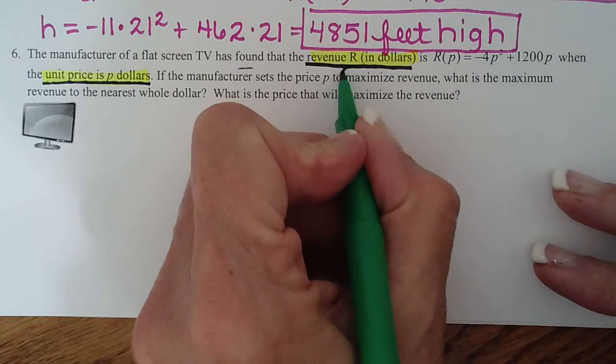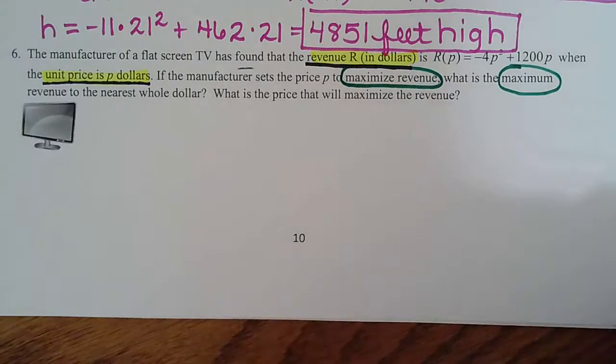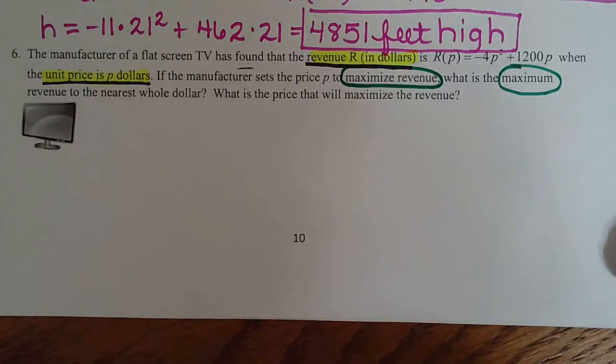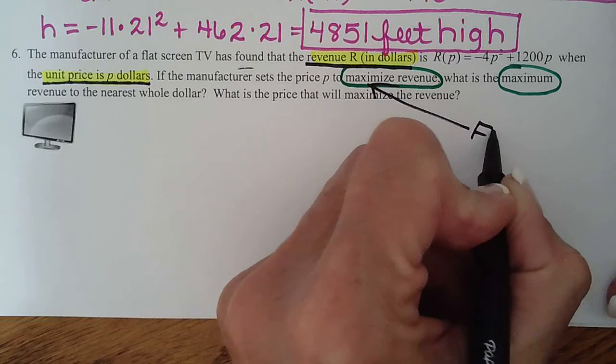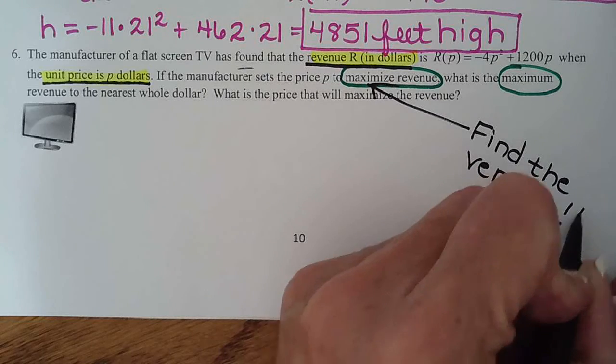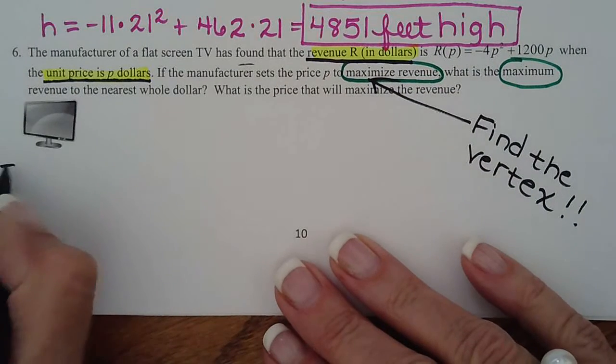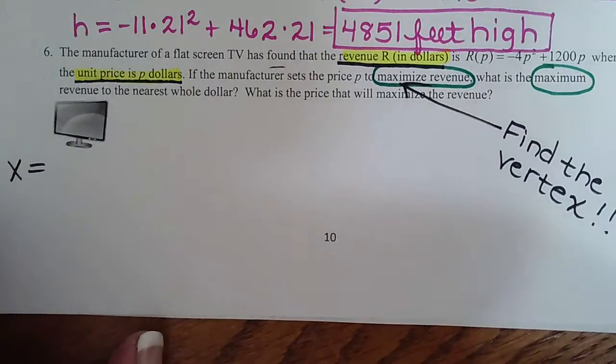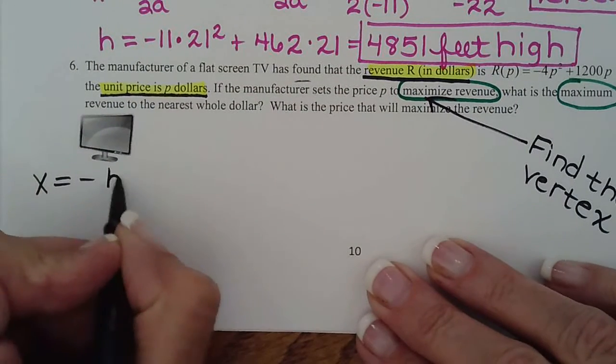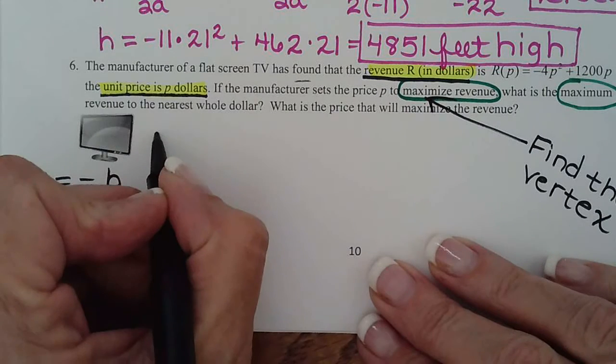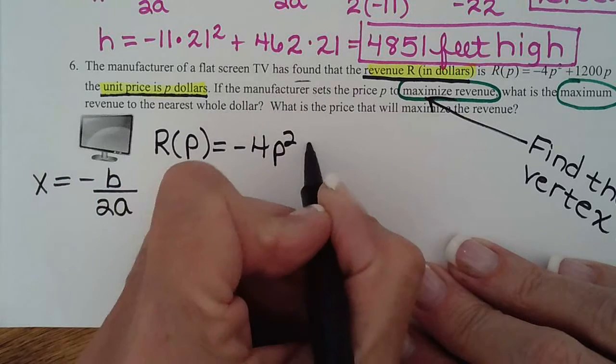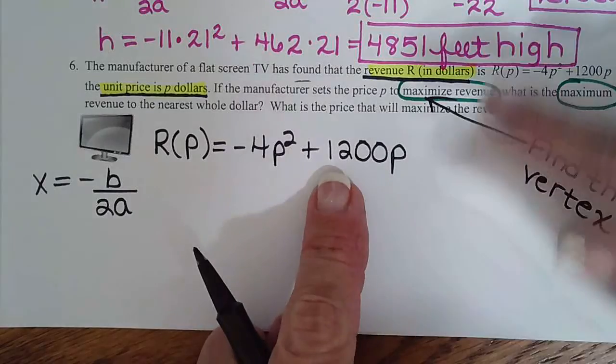If the manufacturer sets the price p to maximize revenue, that is the key word that tells you what to do. So many times students will go, well, I read the word problem but I don't know where to start. Well there's your start. Maximize means find the vertex. So the minute you see maximize or minimize, you know to find the vertex. So I know the vertex formula is x equals the opposite of b over 2a. Let me get my paper situated here. Let's go ahead and write this equation so we don't have to keep looking up there: negative 4p squared plus 1200p.